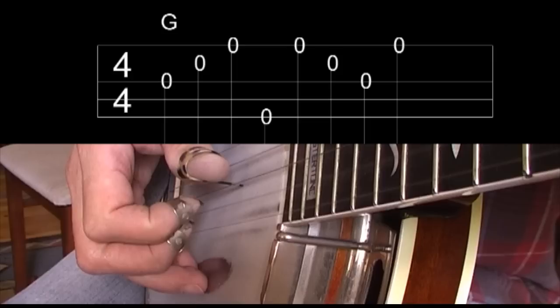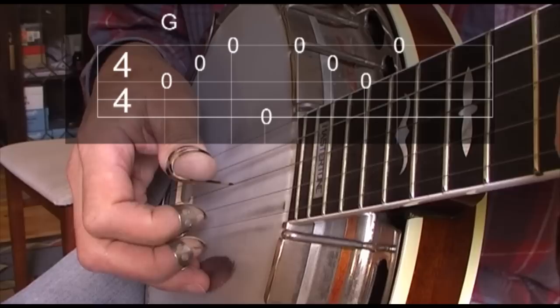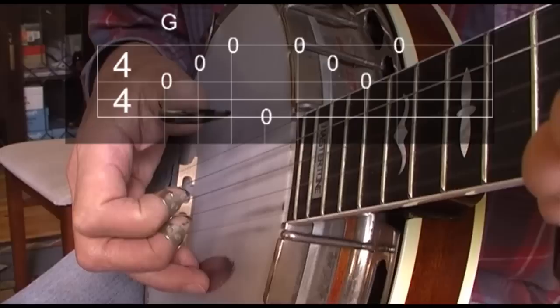Here is the forward-backward roll, very slowly. It starts with the thumb on the middle G string and goes thumb, index, middle.